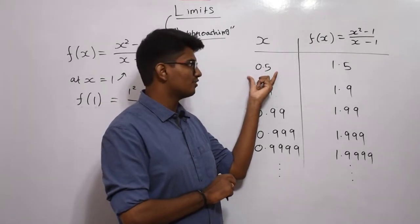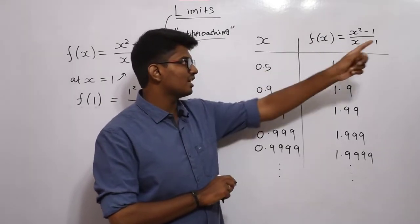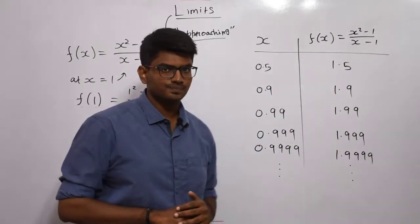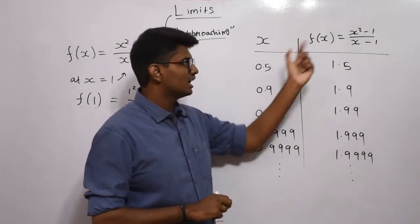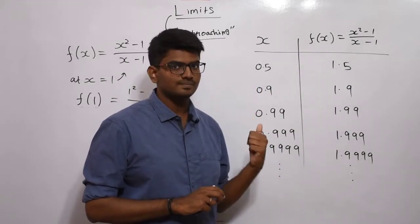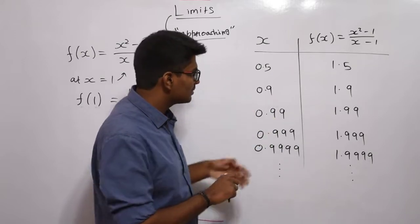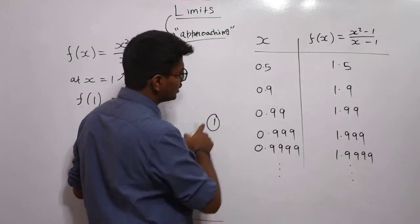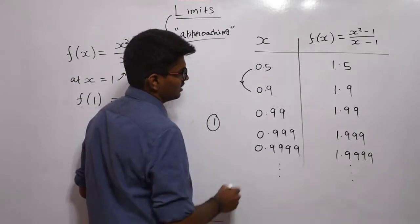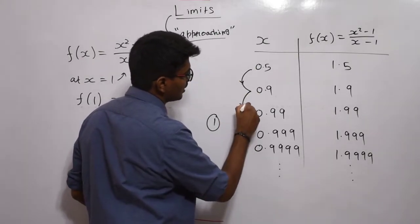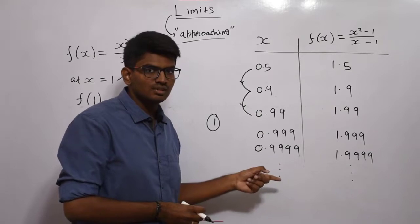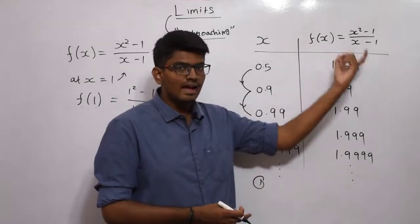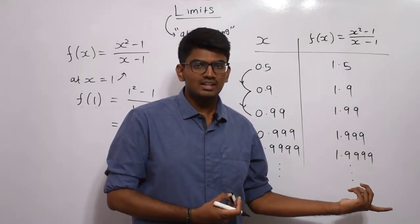Initially I have taken x=0.5, and when I substitute 0.5 in f(x) = (x²-1)/(x-1), I am getting 1.5. If I substitute 0.9 I am getting 1.9. I am now approaching closer. From 0.5 I reached 0.9, then from 0.9 I am reaching 0.99 — approaching closer and closer to 1. 1 is my final destination, but if I directly substitute 1, I get 0 by 0, which is indeterminate and undefined.